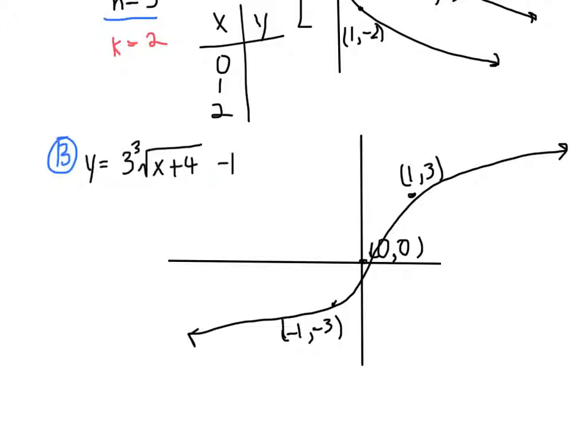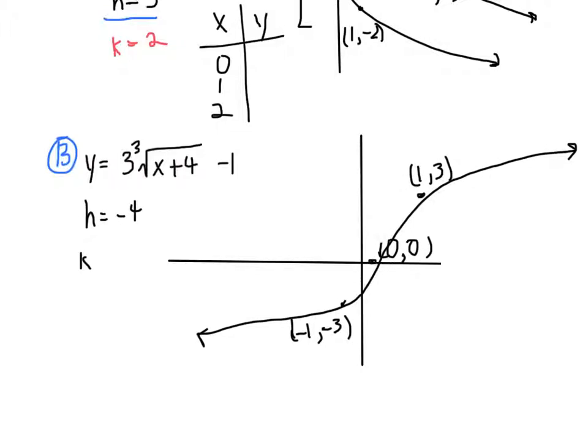And then we're going to translate it. h is negative 4 and k is positive 1. So just a rough sketch of what our translation would look like, we have these points here.